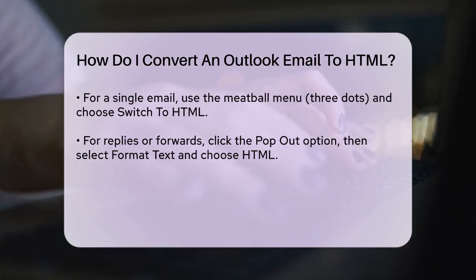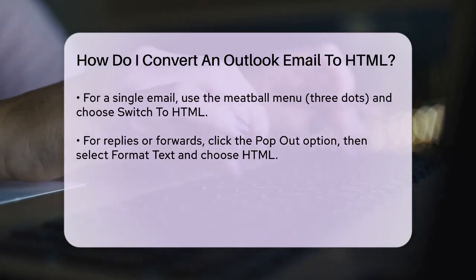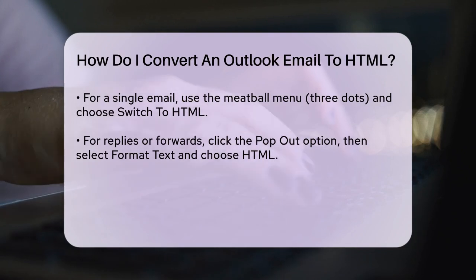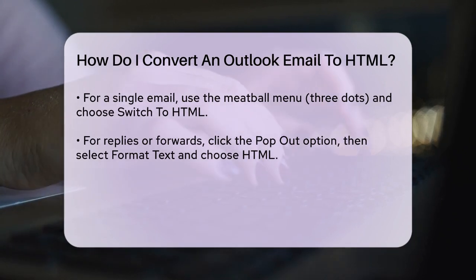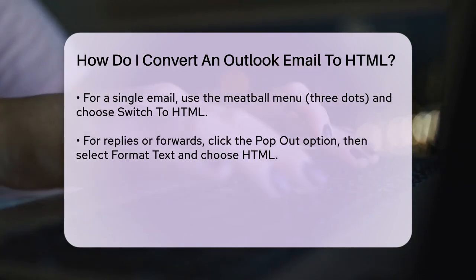In older versions of Outlook, the process is slightly different. You'll need to go to the File tab, select Options, then navigate to Mail and under Compose Messages, choose HTML from the drop-down list.